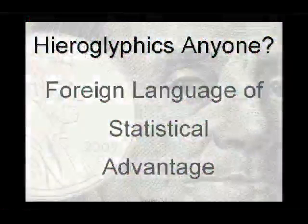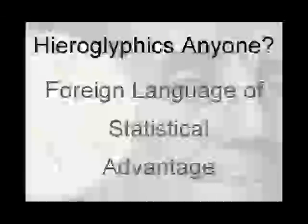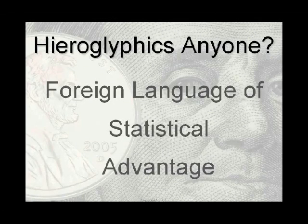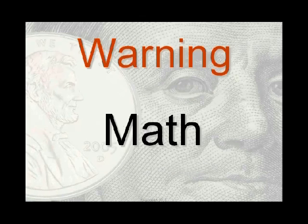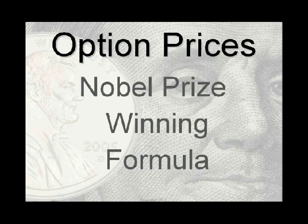We're going to get into the foreign languages statistical advantage. I use the metaphor of hieroglyphics and foreign language because this will be a foreign language to some of you — having said that, this is truly just math. The math is based on formulas. The formula we're going to be talking about is a Nobel Prize-winning formula written by Myron Scholes and Fisher Black in the early 1970s, and they won the 1997 Nobel Prize for Economics. This formula prices options.